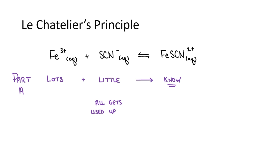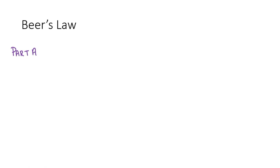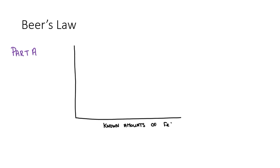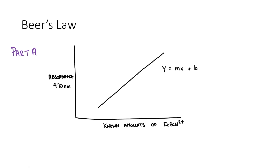So the final concentration of the FeSCN²⁺ ions will be equal to the initial concentration of the thiocyanate ions — the darker the red color, the more ions in solution. For Part A, we will carry out this reaction with a few different ratios, generating a few different known concentrations of the FeSCN²⁺ complex. We will then measure the absorption of these different known samples. Red liquids absorb blue light, so we will set our spectrophotometer to 470 nanometers, which is in the blue region of the visible spectrum.